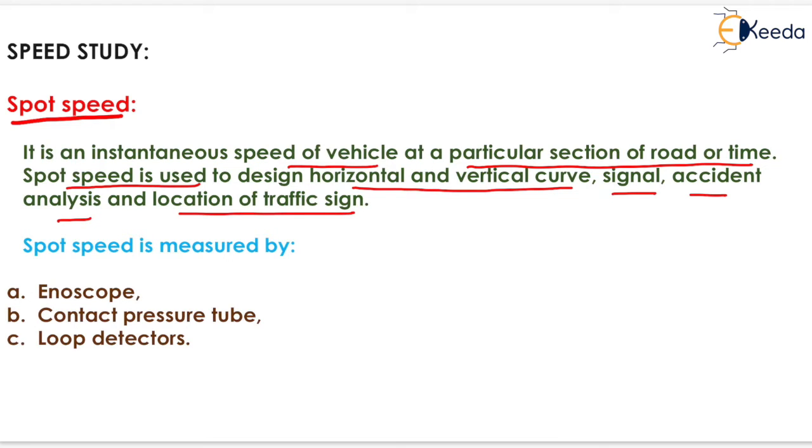If the speed of vehicle at a particular cross section of a road is very high, then the peripheral vision will decrease.